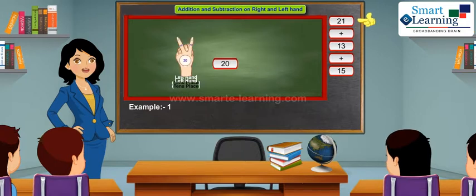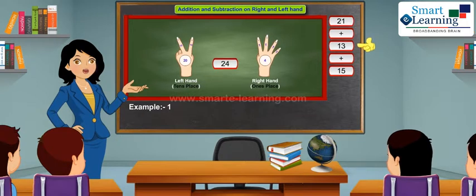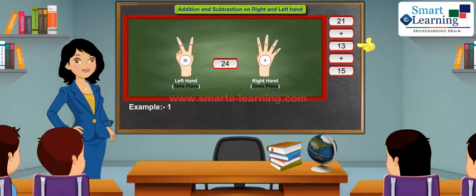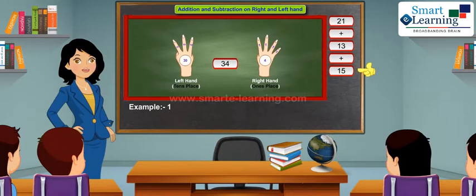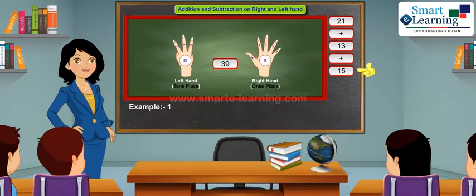Take 21 on your left and right hand respectively. In order to add 13, first add 3 on your right hand by taking 3 more fingers, and 1 on the tens place by taking 1 more finger on your left hand. In order to add 15, take 5 on your right hand by taking the thumb of your right hand, and add 1 on the tens place by taking 1 more finger on your left hand.